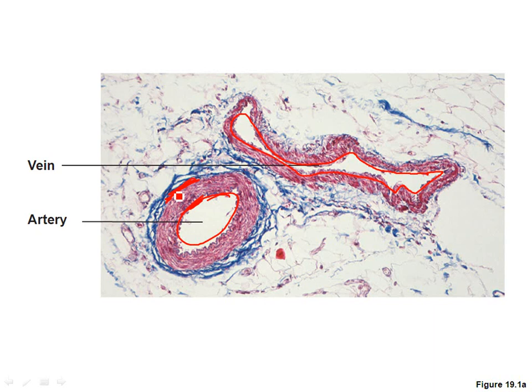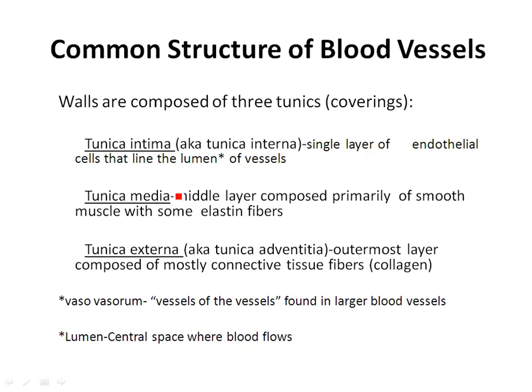There is a great compositional variety among vessels, but there is a common structure called tunics — think of tunics as coverings. When I got dressed this morning I started with the undergarment layer, then a shirt layer, then a blazer. So I have three tunics or three coverings on. With blood vessels, you have a similar type of structure.